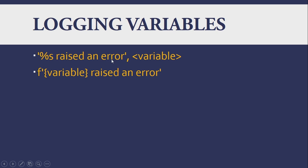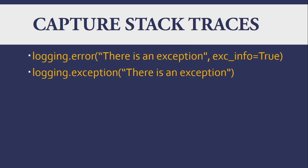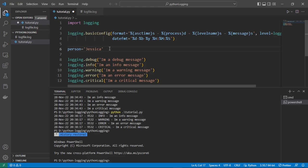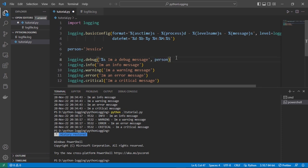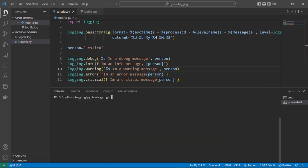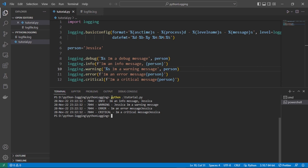We can use variables within our log messages. We can use a variable within a string, or use an f-string to show variable values. Let's create a variable called 'person' and give it a name like 'Jessica', then use that variable within our string. We can also try using an f-string like this. After running it, you can see the person's name appears in every message.